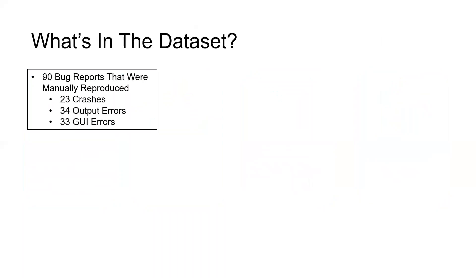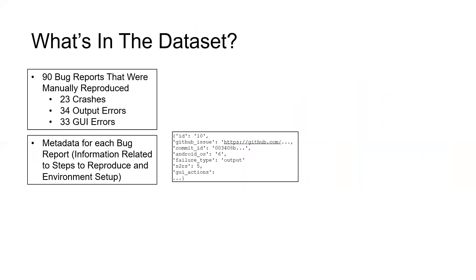So what's in our dataset? This process gave us 90 reproducible bug reports. 23 of them are bugs with crashes within the app, 34 of them have some sort of output error, and 33 of them have an error with the GUI. Each bug report has corresponding metadata, including information related to their steps to reproduce and how to set up the environment.